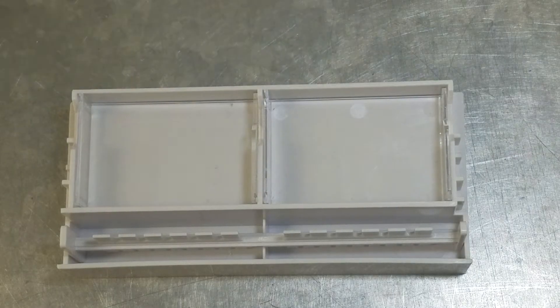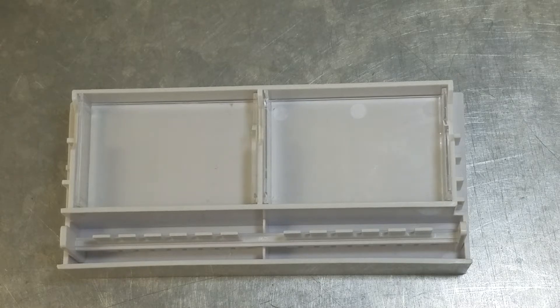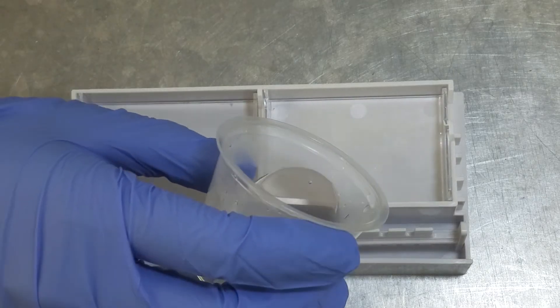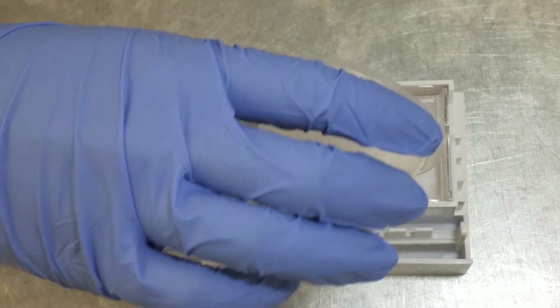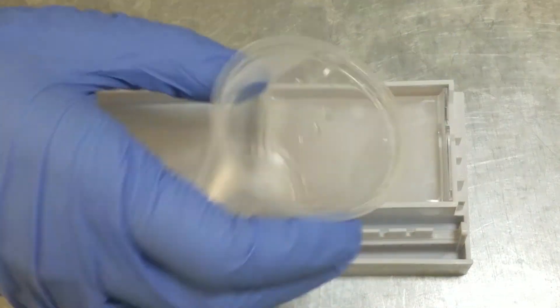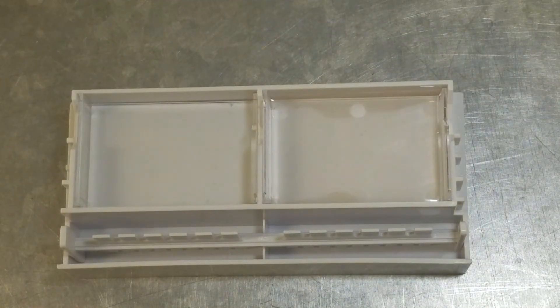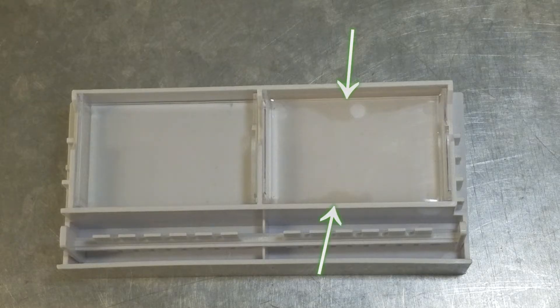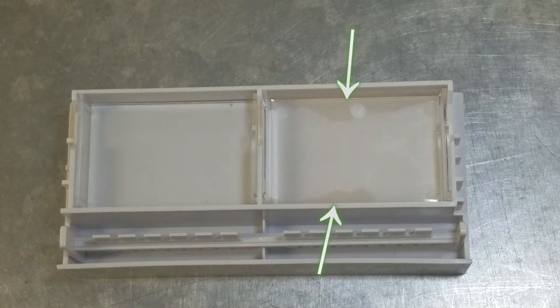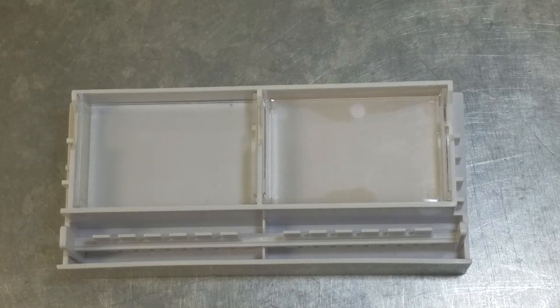Then pour the contents of one gel cup into a single gel casting tray, which is on one side of the casting stand. Again, one gel cup only makes one gel. Some of the agarose may seep underneath the gel tray. Don't worry, the gel will still run.